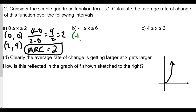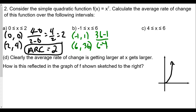For the second interval, when x equals negative 1, f(negative 1) equals 1. When x equals 6, f(6) equals 36. The average rate of change is 36 minus 1 over 6 minus negative 1, which is 35 over 7. Seven goes into 35 evenly, so the average rate of change is 5.